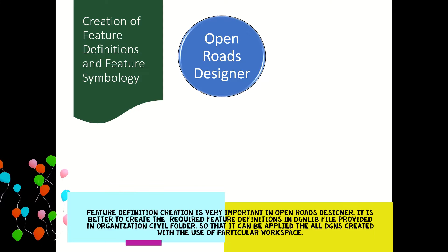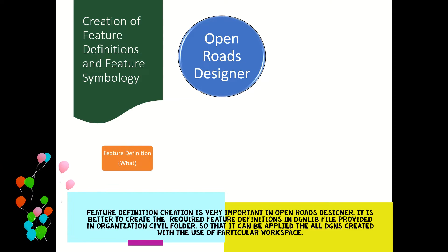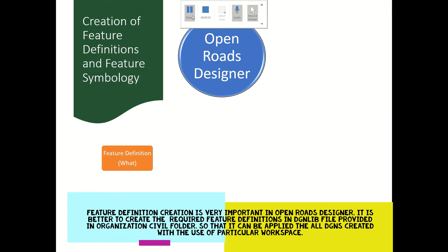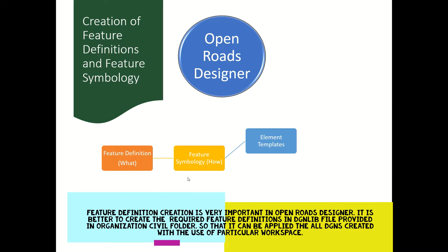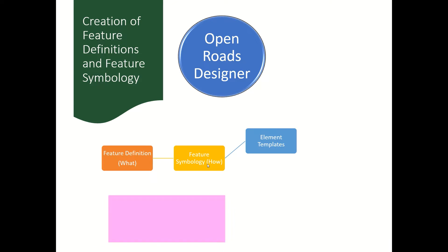Let me show some workflow. A feature definition is basically the information of a particular element, which may be a centerline or a layer or some point while creating templates. How it is going to look is decided by the feature symbology. Feature definition signifies what it is, and feature symbology is linked with how it is going to look.